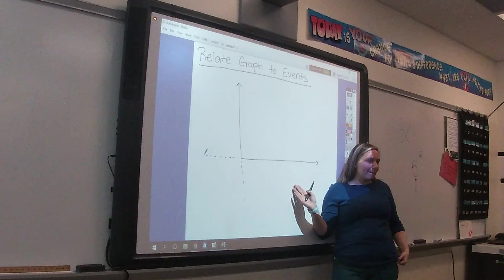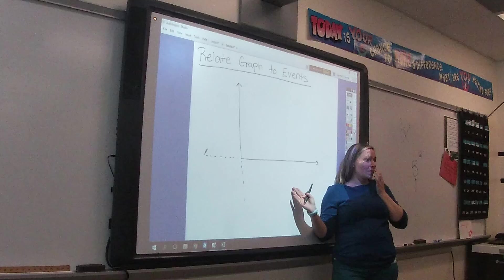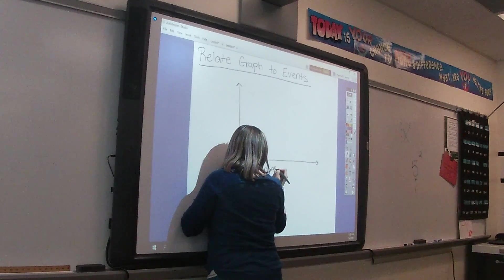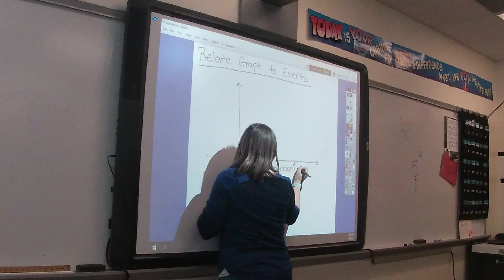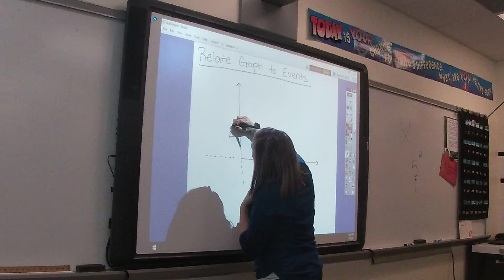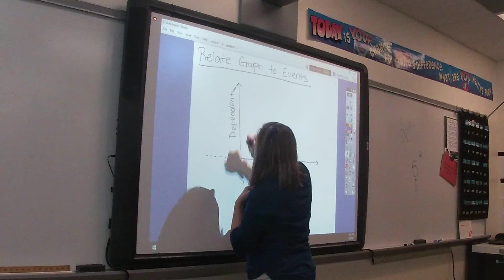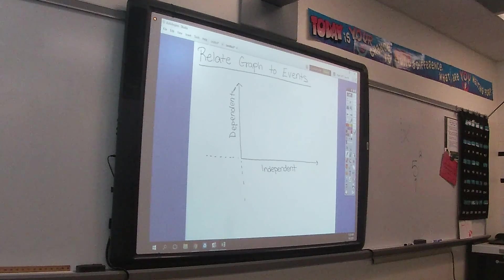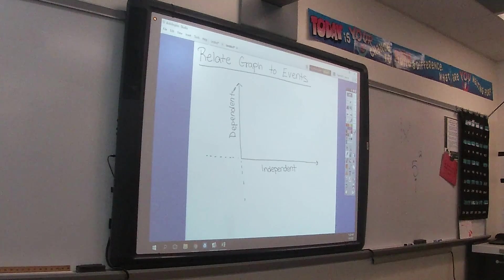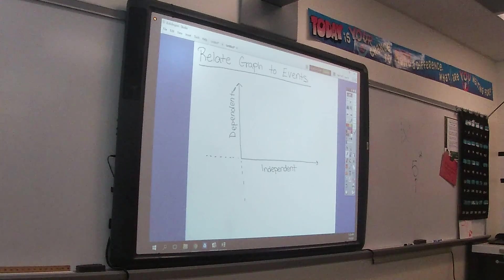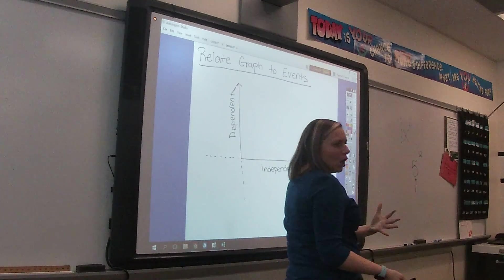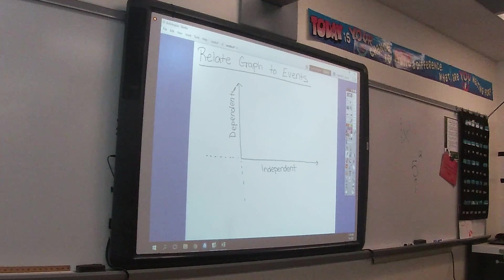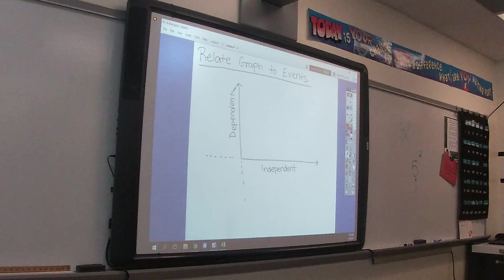Independent. We're putting our independent variable down here, and we're putting our dependent variable over here. What does it mean for it to be independent and dependent? Mason? It doesn't rely on any other. Right, so we have this factor of one is relying on the other. One of it sort of stands alone, and one of them is relying on the other. It's sort of like which came first. What do we have to have happen first before we can consider anything else?